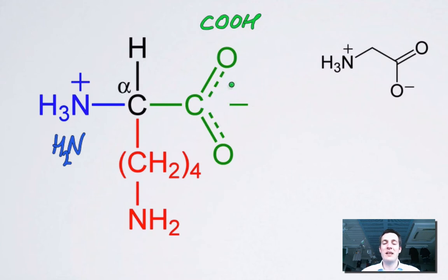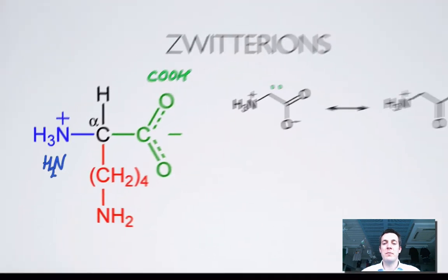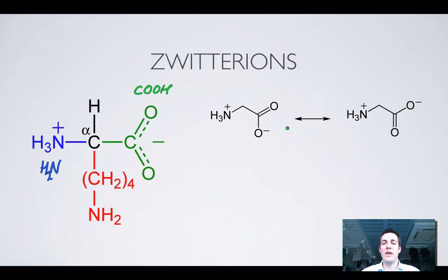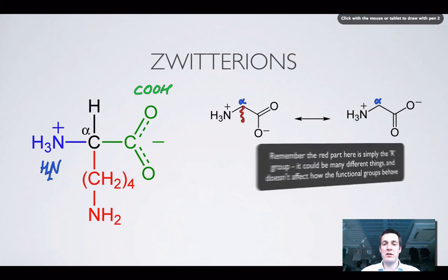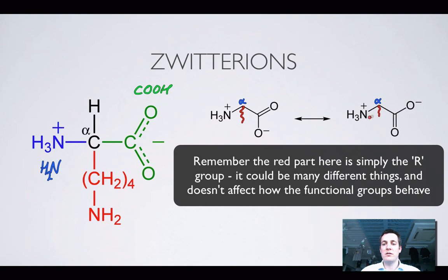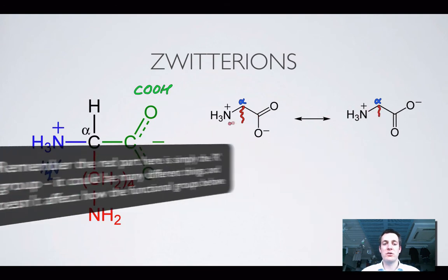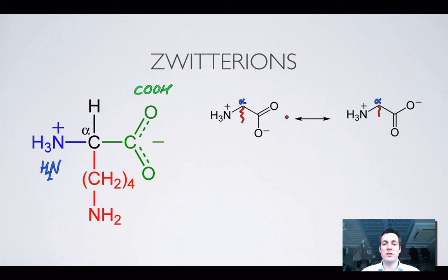The dotted line in the zwitterion diagram refers to the fact that the double bond can flip between the two oxygens. This is slightly beyond the scope of the course, but as long as you can draw the molecule in either form — showing the oxygen that lost the hydrogen, the carbonyl carbon, and labelling the alpha carbon — that is sufficient. The two diagrams simply show that the double bond can exist in either position depending on where we place the negative charge.